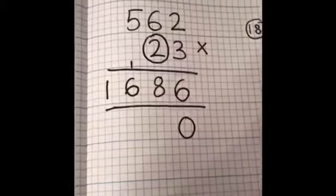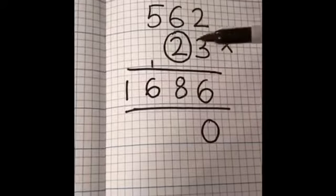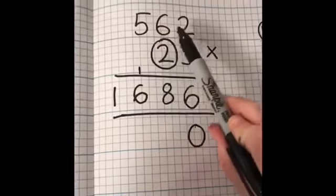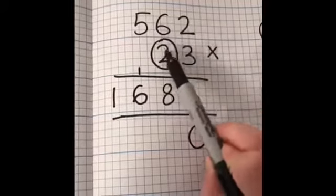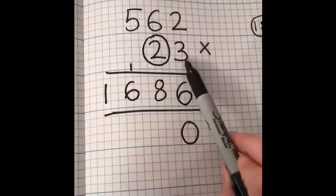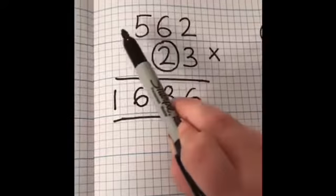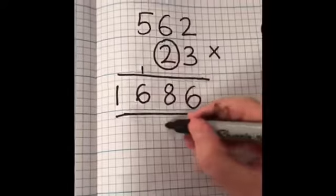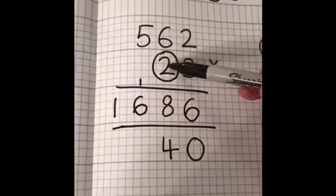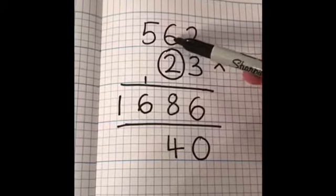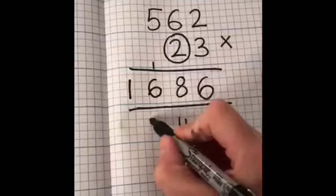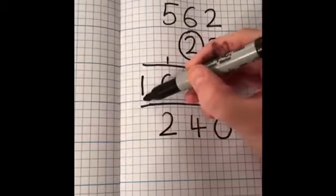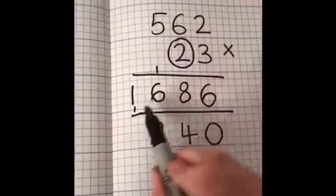That might help you, it might not – it's there if you need it. Now do exactly the same thing, except I'm going to be multiplying 2 by the numbers at the top. I'm going to work my way across exactly like what I did with the 3. The first one I'm going to do is 2 times 2, which is 4. Then I'm going to do 2 times 6, which is 12, so I put my 2 there and carry my 1.